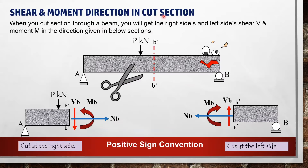We will use the method of section in the analysis of beams. When the section cuts through a beam, the beam can be drawn in two sections. The free body diagram shall include all the forces on the section, such as support reactions, external loads, and internal forces, and these forces must be in equilibrium.